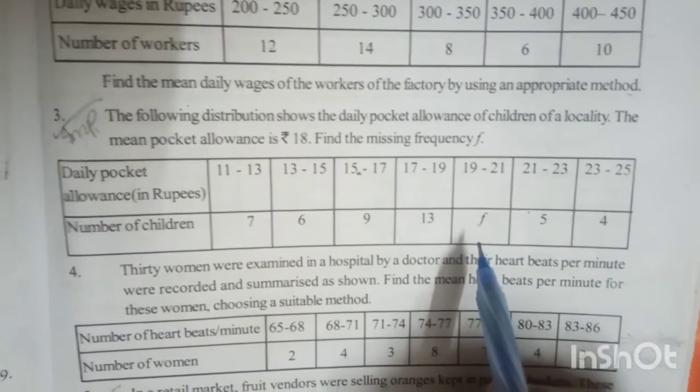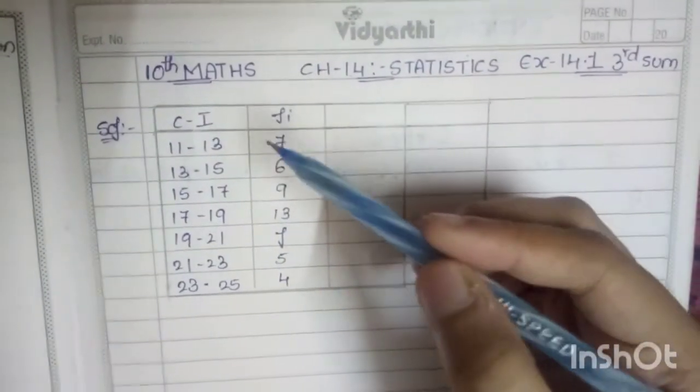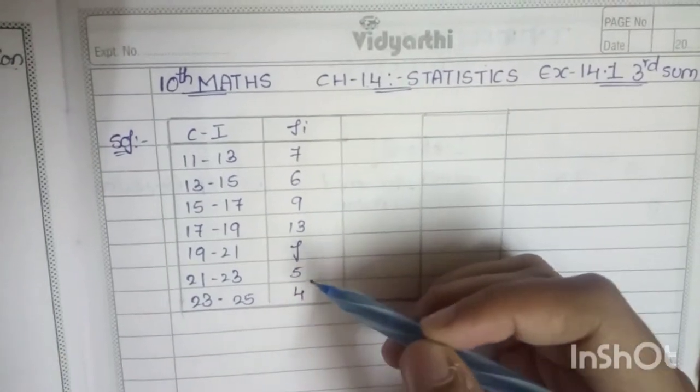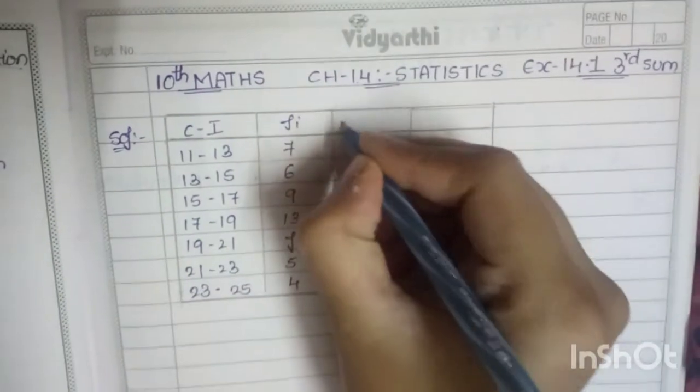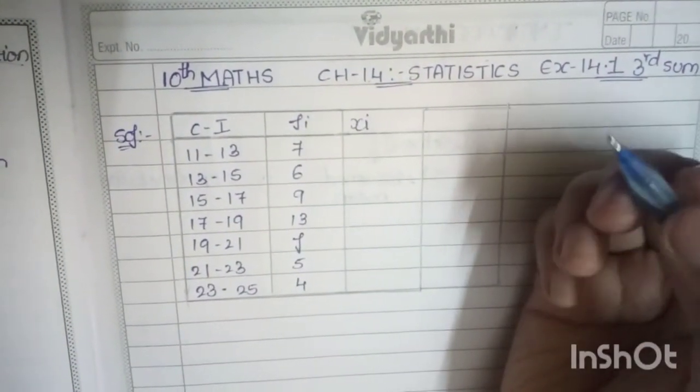So let us do it. Friends, I have copied the same sum here vertically. For finding the value of f, we have to continue the same process that we follow for finding the mean. First, we have to find the value of xi. What is the value of xi? It is the midvalue of class intervals.